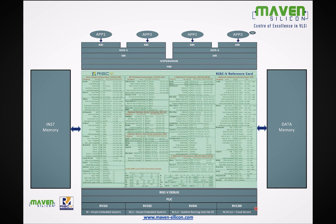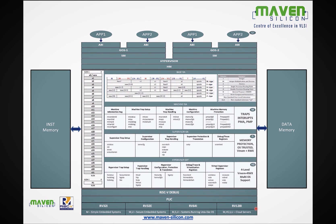There are various instructions as part of the base ISA — 40 instructions — and there are instructions for various extensions like multiplication and division, single precision and double precision floating point, and compressed extensions. We will explore all these instructions as part of this training course. This is how you can visualize the RISC-V open ISA.